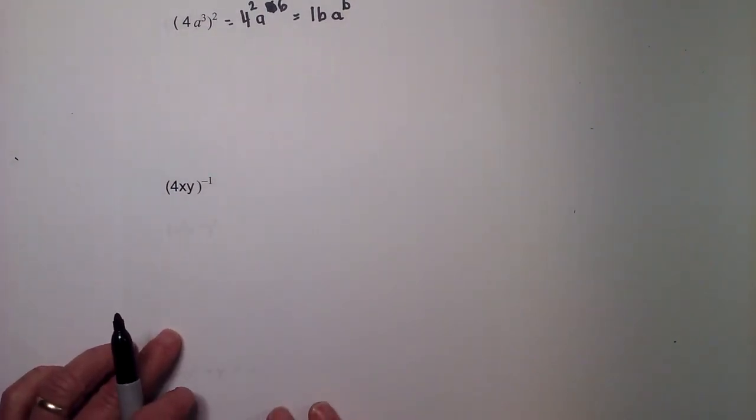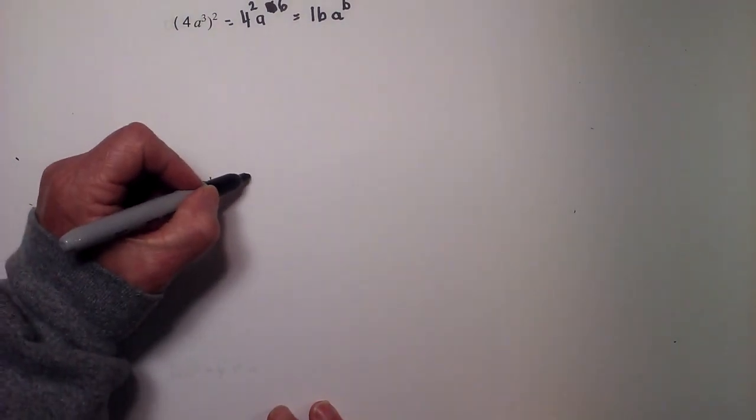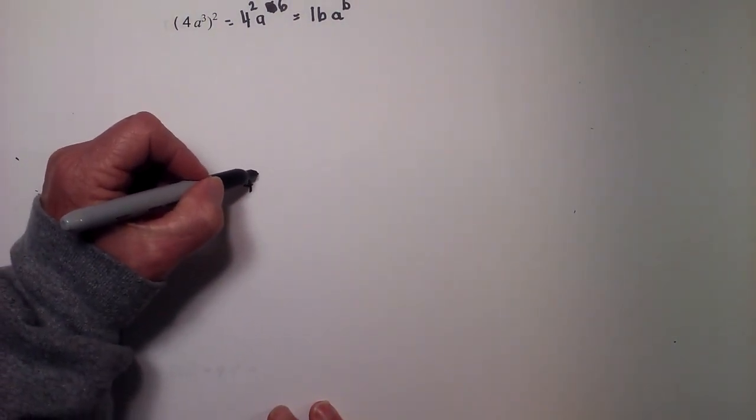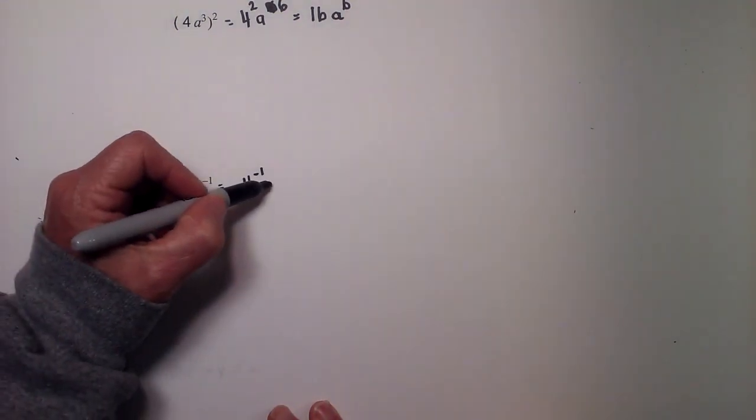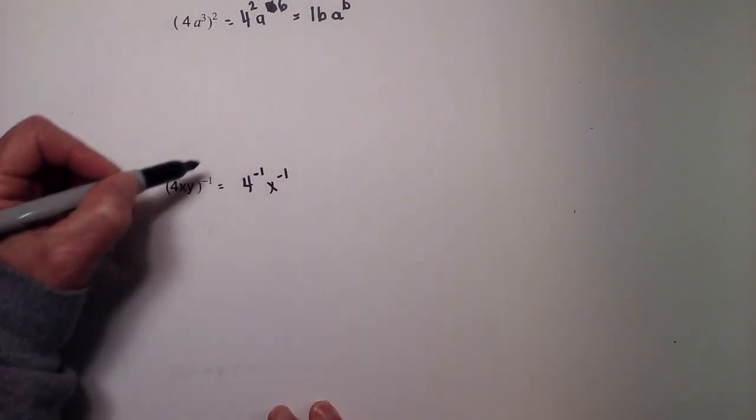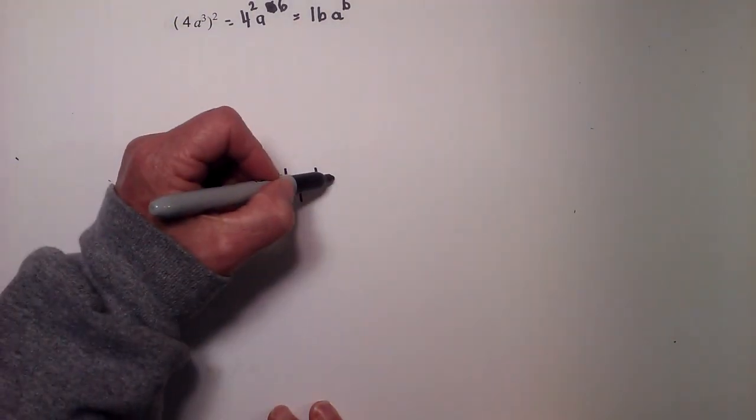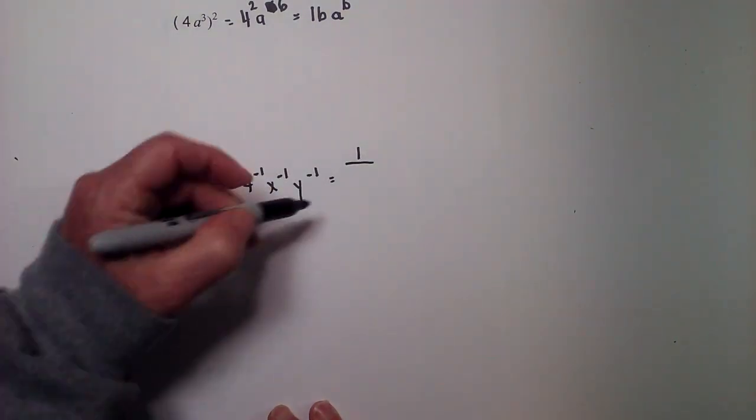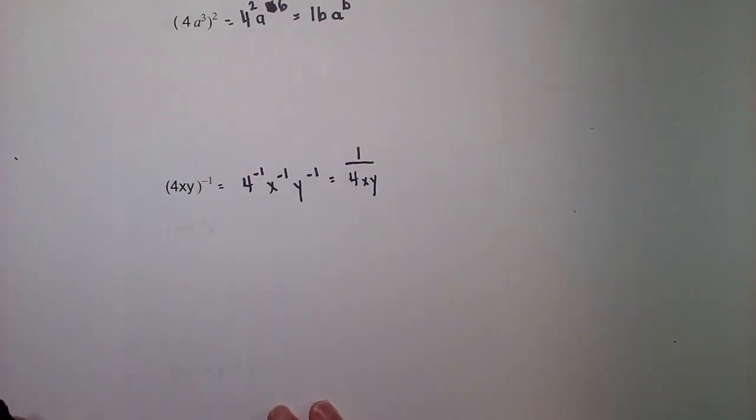Now let's work one with a negative. Negative 1 times 4 to the 1st is equal to 4 to the negative 1st power. Then negative 1 times X, negative 1, negative 1 times Y, negative 1. And then this could be written 1 over 4XY.